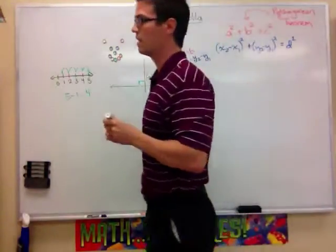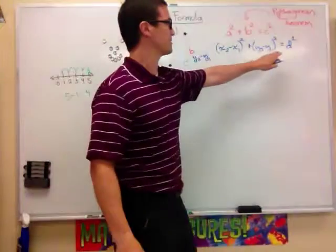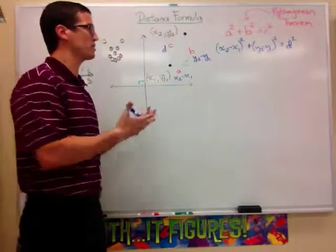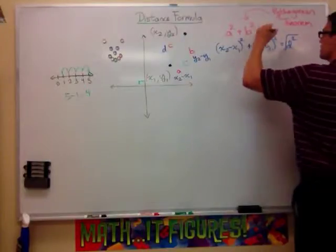So, we're all about the distance formula. Now, to make this an actual distance formula, we need d by itself. As you can see, it's d squared right now. The opposite of squaring something would be taking the square root of it. So, I'm going to take the square root of both sides.